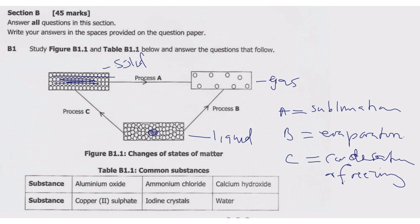The substances that undergo sublimation include iodine and ammonium chloride. From the table, iodine crystals undergo sublimation, and ammonium chloride also undergoes sublimation. Other common examples of substances that sublime include ammonium sulfate and carbon dioxide (dry ice).